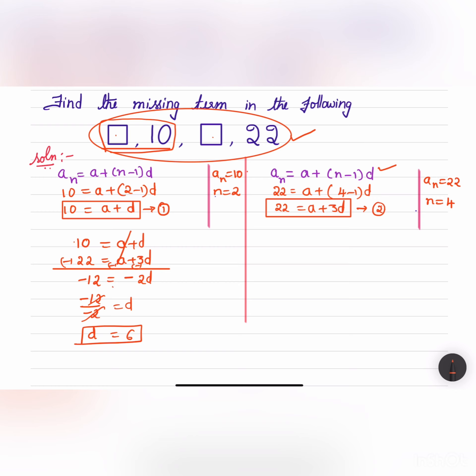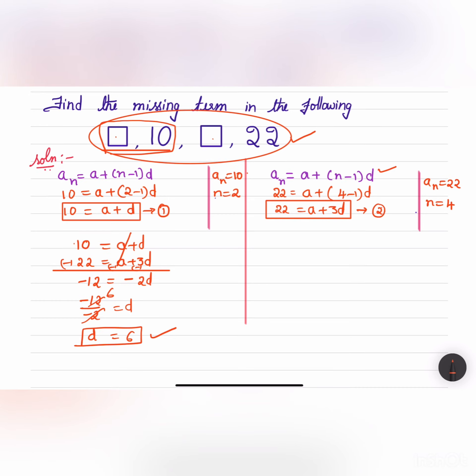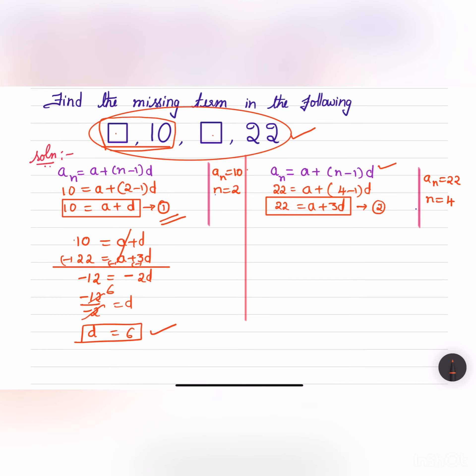2 ones are 2. 6 are 12 and minus by minus is plus. We got d and we should get a. We can substitute the value of d in any one of these two equations either 1 or 2. Let me substitute the d value in the second equation. 22 is equal to a plus 3 into 6. 22 is equal to a plus 18. Hence, 22 minus 18 is equal to a and a will be equal to 4.